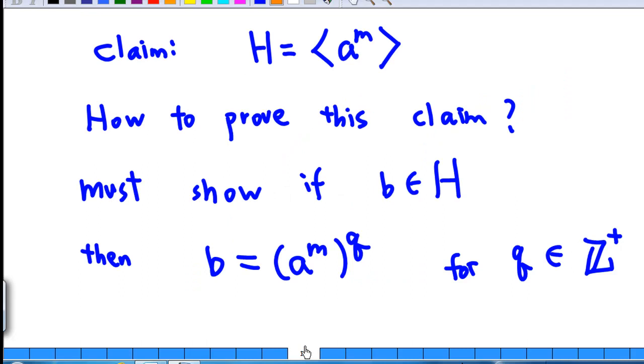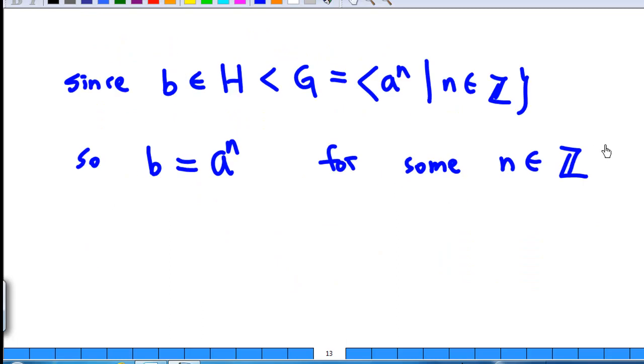Let's go back to our claim. We want to show that b equals a power m raised to power q for some positive integer q. Since b is in H, b is also in G. Therefore, b equals a power n for some integer n.